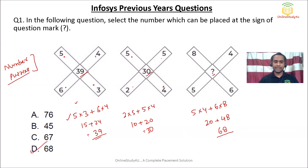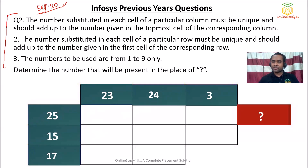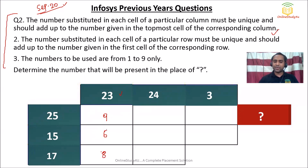Question number 2 is also from the Infosys exam — this one from September 2020. The rule is: the numbers substituted in each cell of a particular column must be unique and should add up to the number given in the topmost cell of that column. For example, if the column total is 23, you could fill in 9, 6, 8: 9 + 6 = 15, and 15 + 8 = 23.